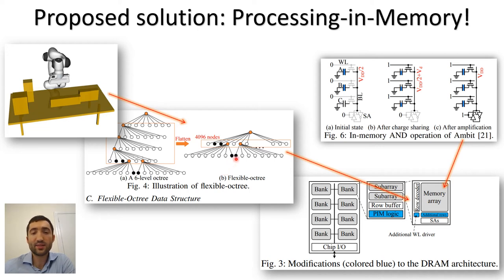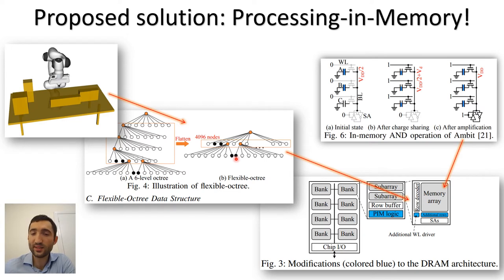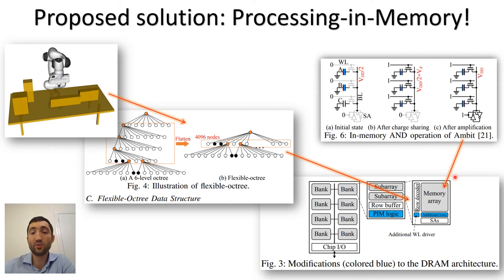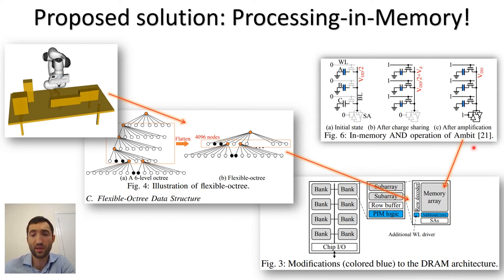Next, he describes how to place this data into the DRAM in a smart way so that all we have to do is to compute the AND between two nodes, and this computation can be done in memory using the m-bit strategy described in a previous paper.